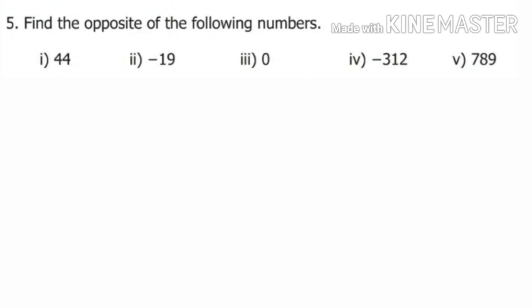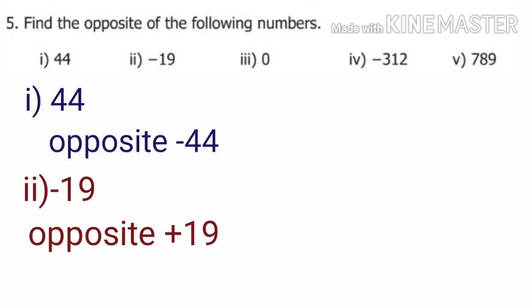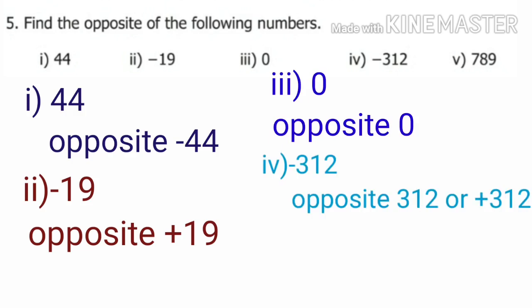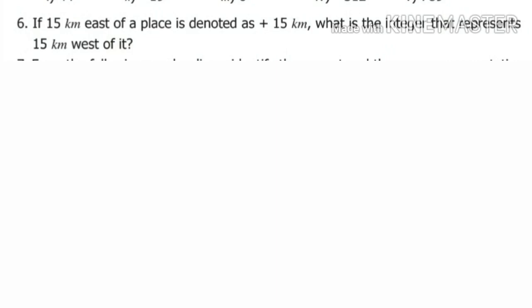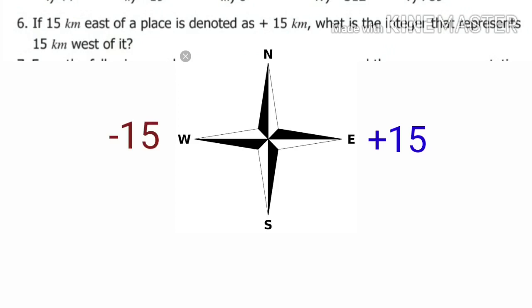Fifth: find the opposite of the following numbers. 44's opposite is minus 44. Minus 19's opposite is plus 19. Zero's opposite is zero. Minus 312's opposite is plus 312. 789's opposite is minus 789. Sixth sum: if 15 km east of a place is denoted as plus 15 km, what is the integer that represents 15 km west of it? West is the opposite of east, so west of 15 km is mentioned as minus 15 km.